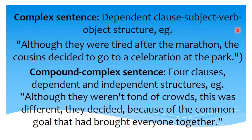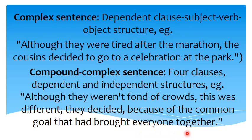Complex sentences have a dependent clause followed by a subject-verb-object structure. For example: 'Although they were tired after the marathon, the cousins decided to go to a celebration at the park.' Compound-complex sentences combine dependent and independent clauses. For example: 'Although they weren't fond of crowds, this was different — they decided because of the common goal that had brought everyone together.'